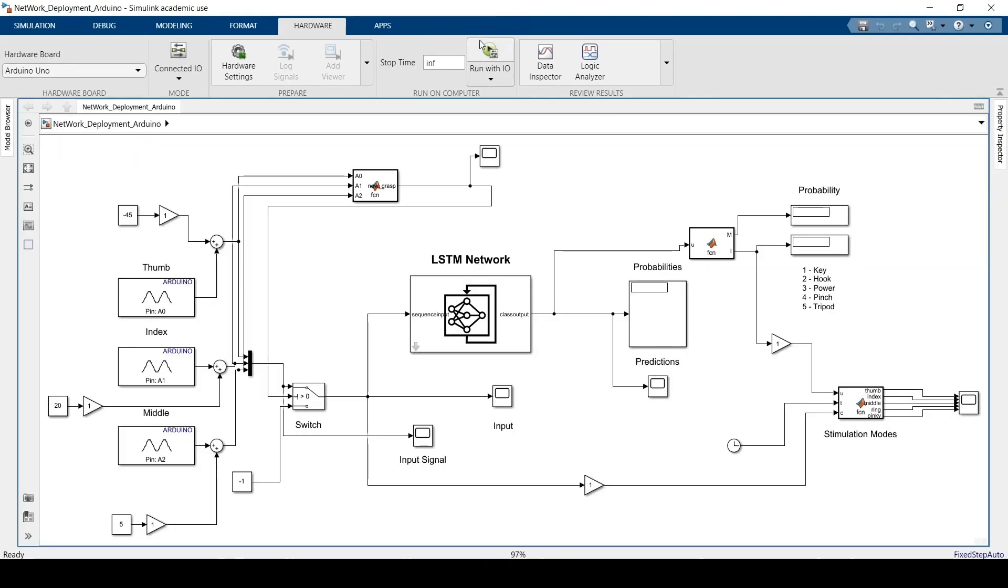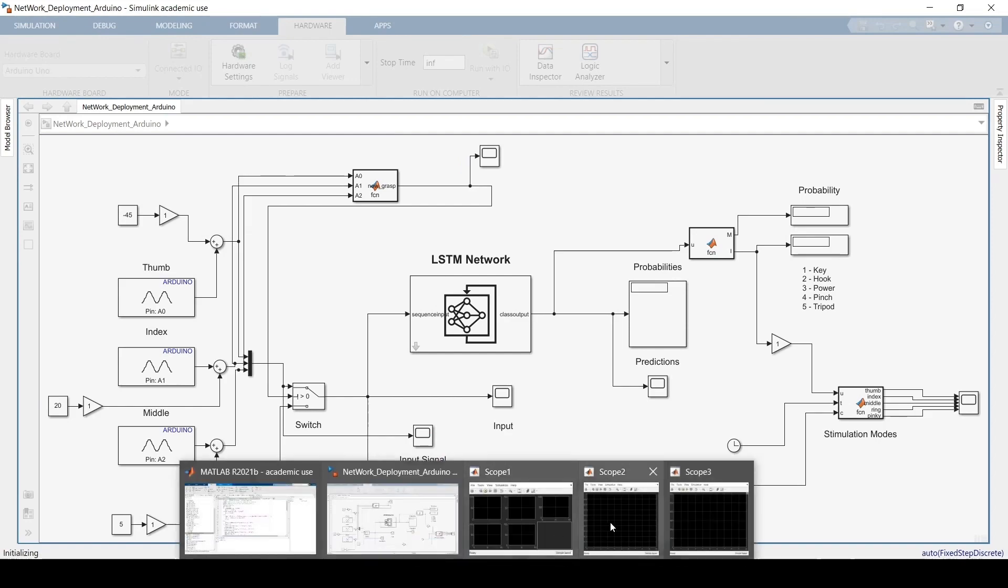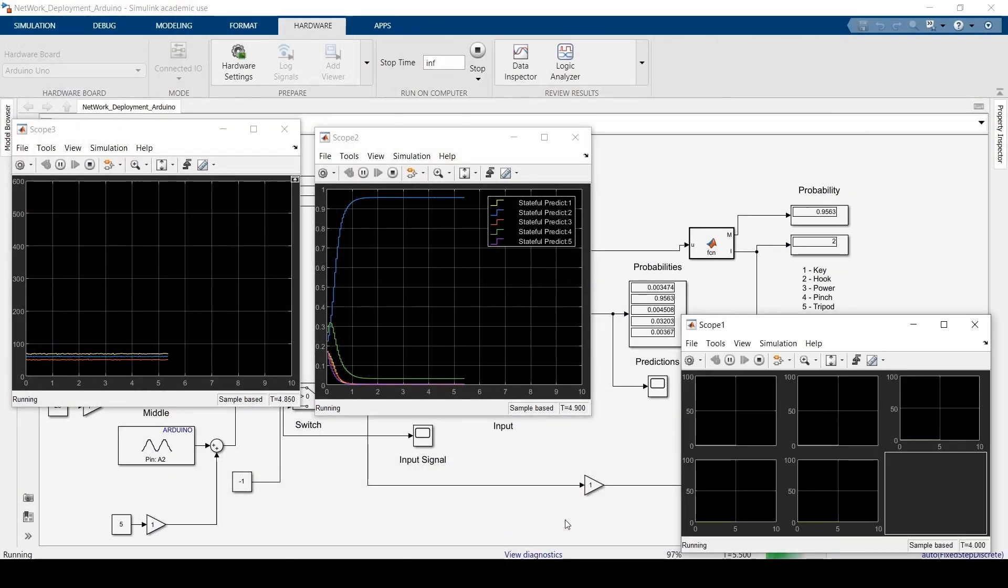Another form of simulation that we did with Simulink is to use the same setup I showed before but without the Adams model. In this case we can directly view the outputs and we perform multiple grasps. One important thing to note is we are constantly logging.